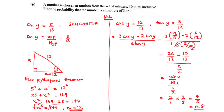Now let's move on to part B. A number is chosen at random from the set of integers between 10 and 30 inclusively. We are going to find the probability that the number chosen is a multiple of 3 or 4. Let's solve part B.